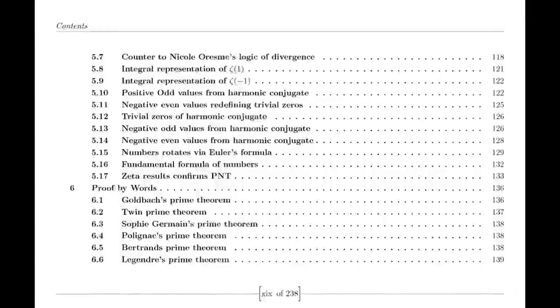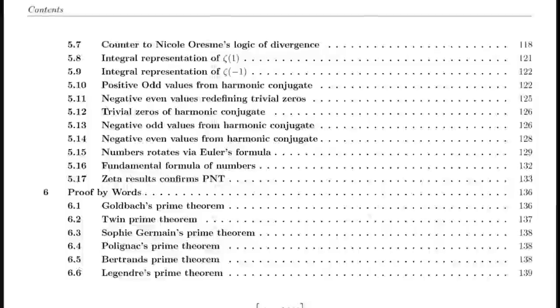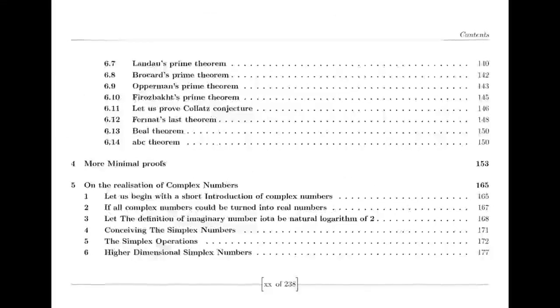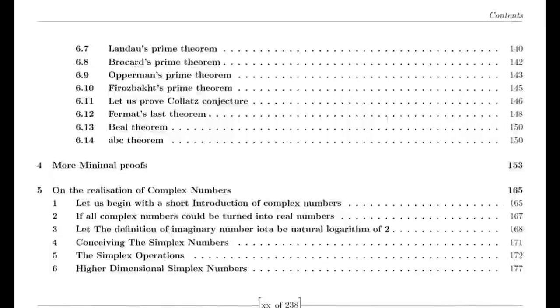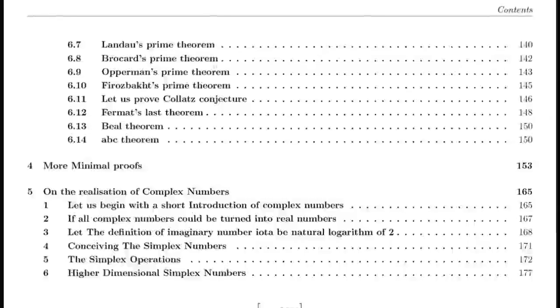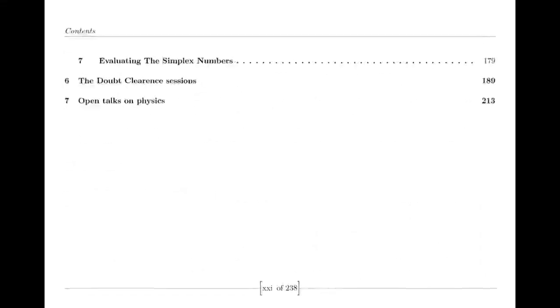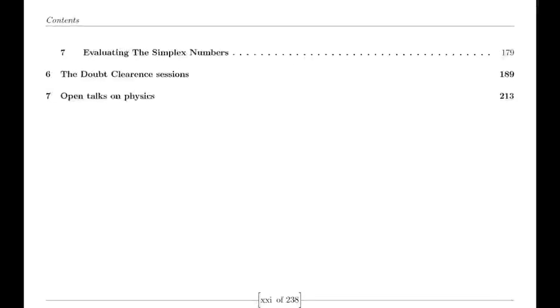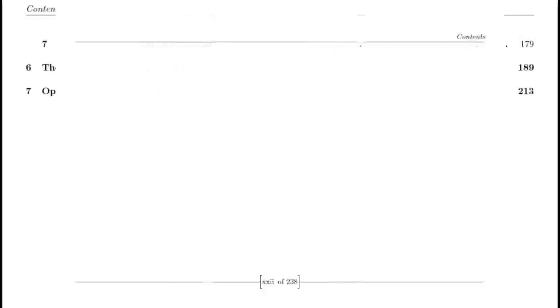Riemann was also influenced by the Dirichlet eta function, defined by an alternating series. This function is closely related to the zeta function and provides valuable insights into its behavior, particularly for values of s less than 1. The relationship between the eta function and the zeta function is encapsulated in a simple formula involving the gamma function and powers of 2, which helps in understanding the zeta function's properties across different regions.